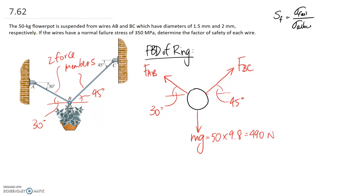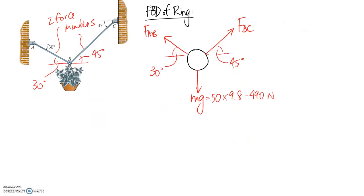So now we just need to figure out these two forces FAB and FBC and we have our equilibrium equations in order to do that. So I'm going to start with summing forces in the x direction to be equal to 0.